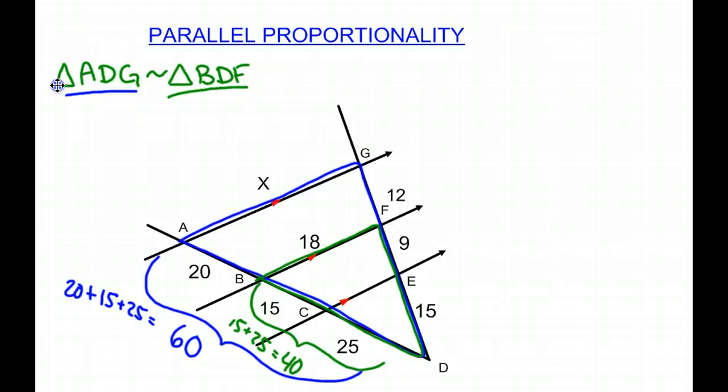So now we can compare the two sides. So we have the first one, X and 60. And that will equal the second one. So if we match them up, 18 and 40. So what we're going to do is we're going to cross multiply. So we get 40X is equal to 18 times 60. When we do 18 times 60, we get 1080.